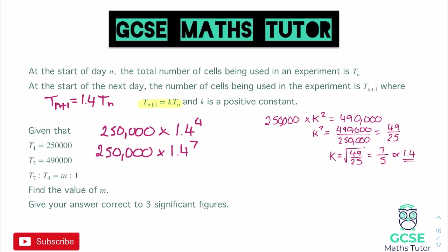So 250,000 times 1.4 to the power of 4 and that gives us 960,400. Let's change that to a power of 7. So as a power of 7 this comes out as quite a long number: we've got 2,635,337.6.